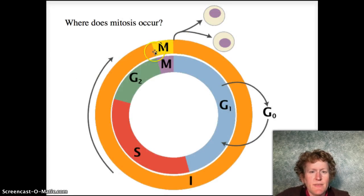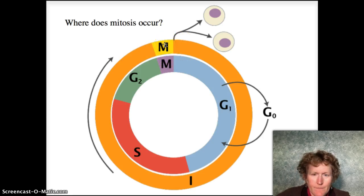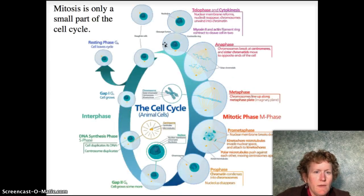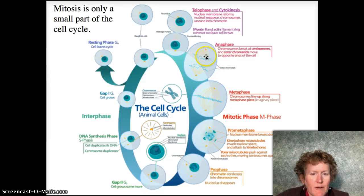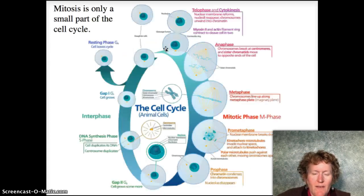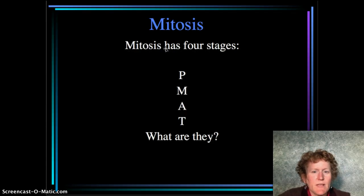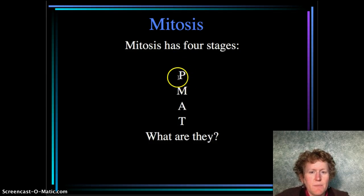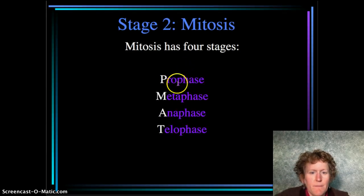Mitosis occurs at the end of the cell cycle. It's only a small part of the cell cycle — it looks like a big part in the diagram, but it's really just a small portion. Mitosis has four stages, and those are represented by the letters PMAT: prophase, metaphase, anaphase, and telophase.